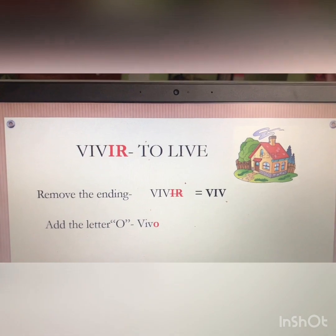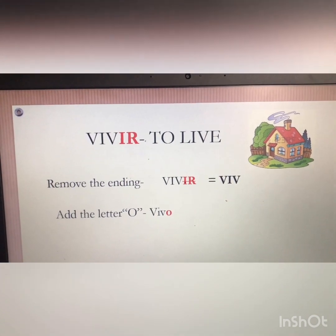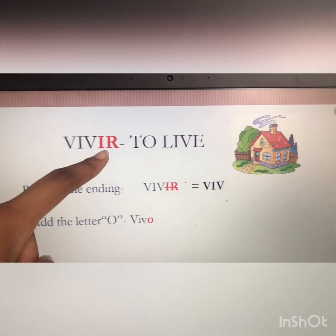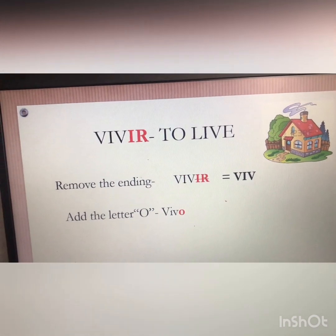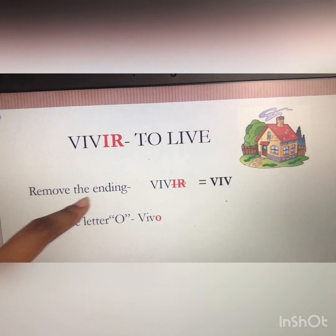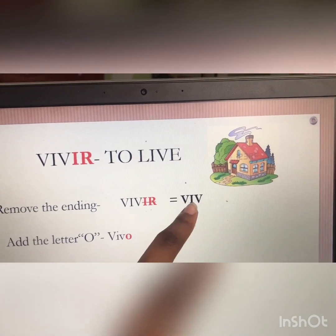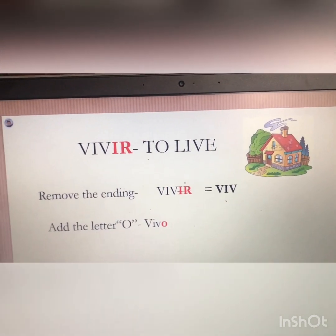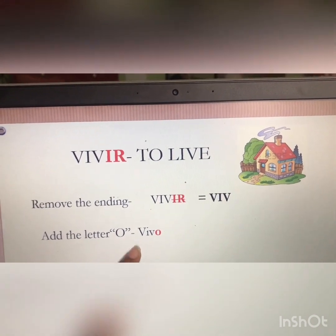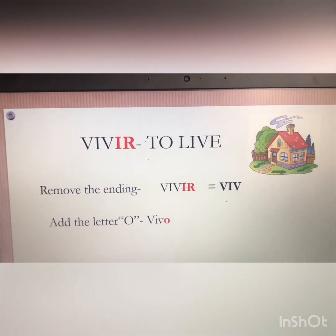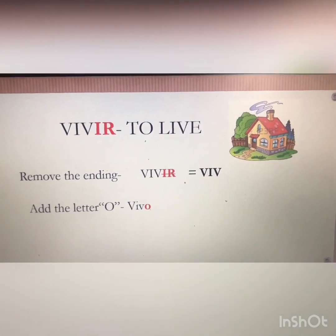Let's do another example together. This time we have an IR verb. How do we know it's an IR verb? Well, it ends with IR. This verb means 'to live.' Step one: remove the ending — we remove the IR. When we remove the IR, we are left with V-I-V. Then we add the letter O, so we end up with 'vivo.' That's why you always say 'yo vivo en,' meaning 'I live in,' and then you give where you live.